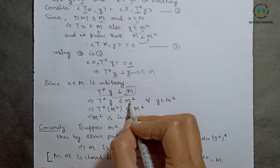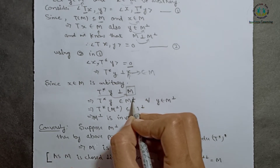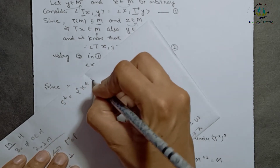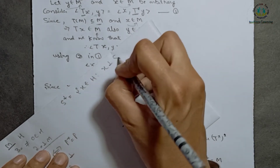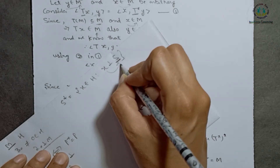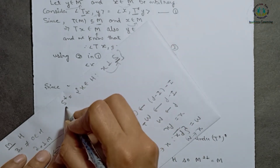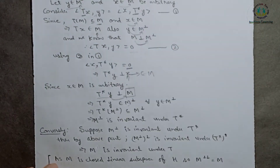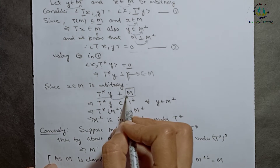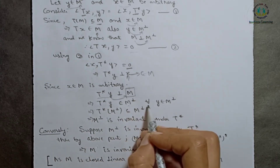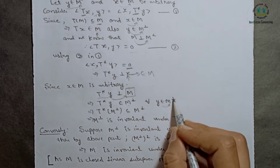So T* y belongs to M orthogonal, because T* y is perpendicular to M. The orthogonal of a set S is defined as all elements in H perpendicular to every element of S. So every element perpendicular to M belongs to M orthogonal. Thus T* y belongs to M orthogonal for every y in M orthogonal.